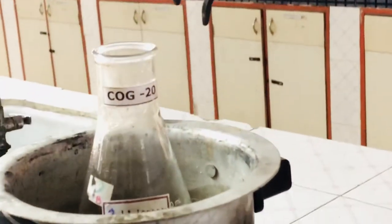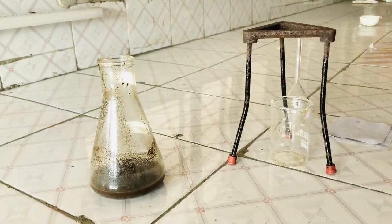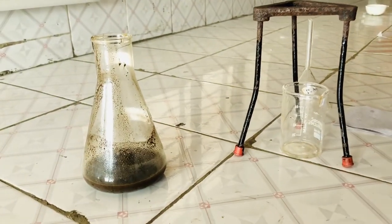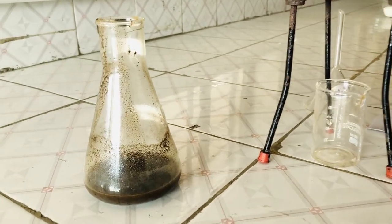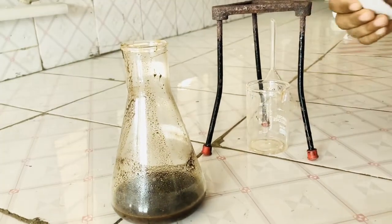Since it has been 30 minutes we would remove this for further process. Now the contents of the conical flask have cooled down. So we will filter the contents of the conical flask through the filter paper. Let's set the assembly.